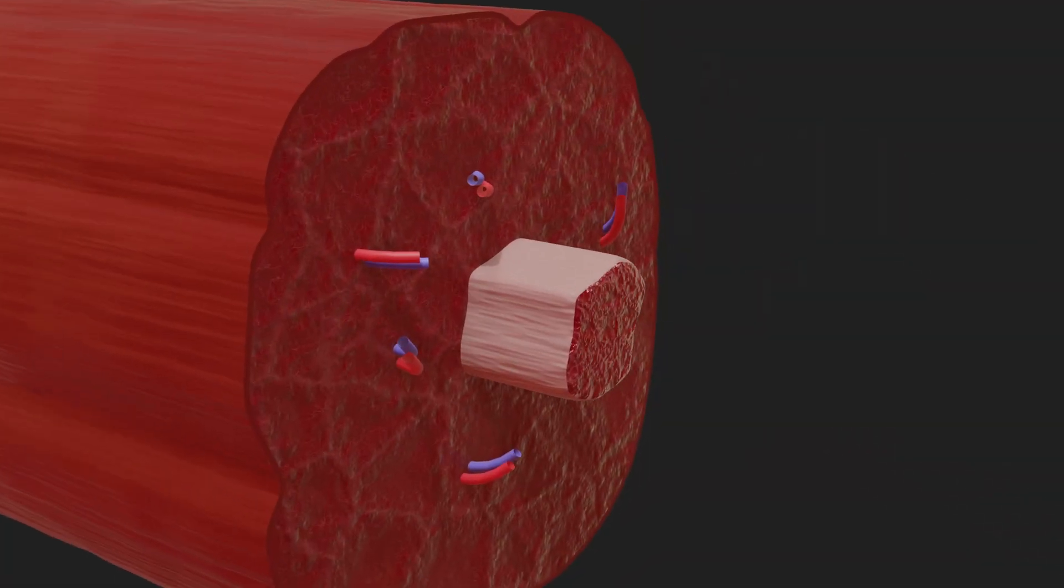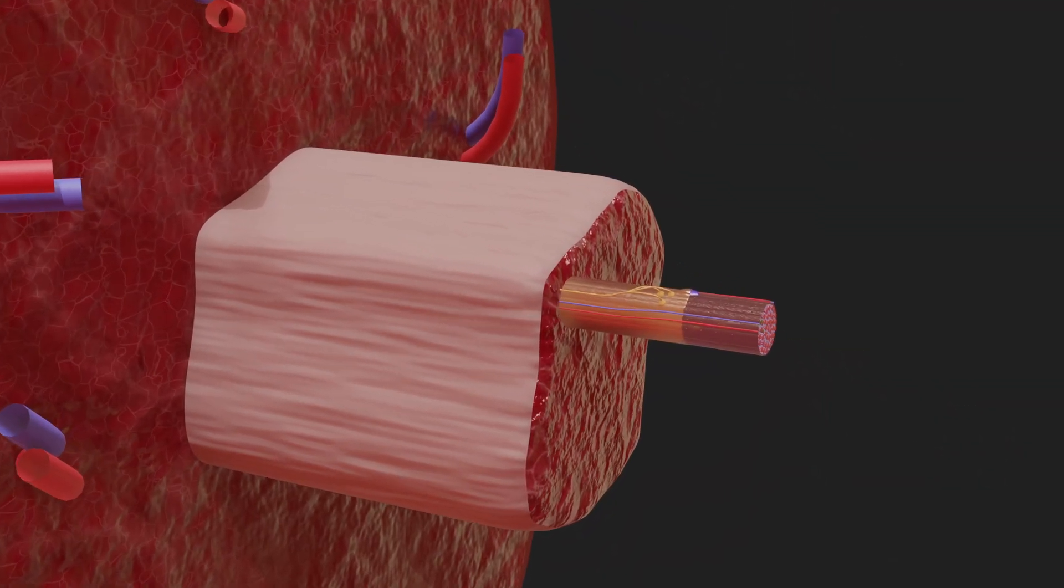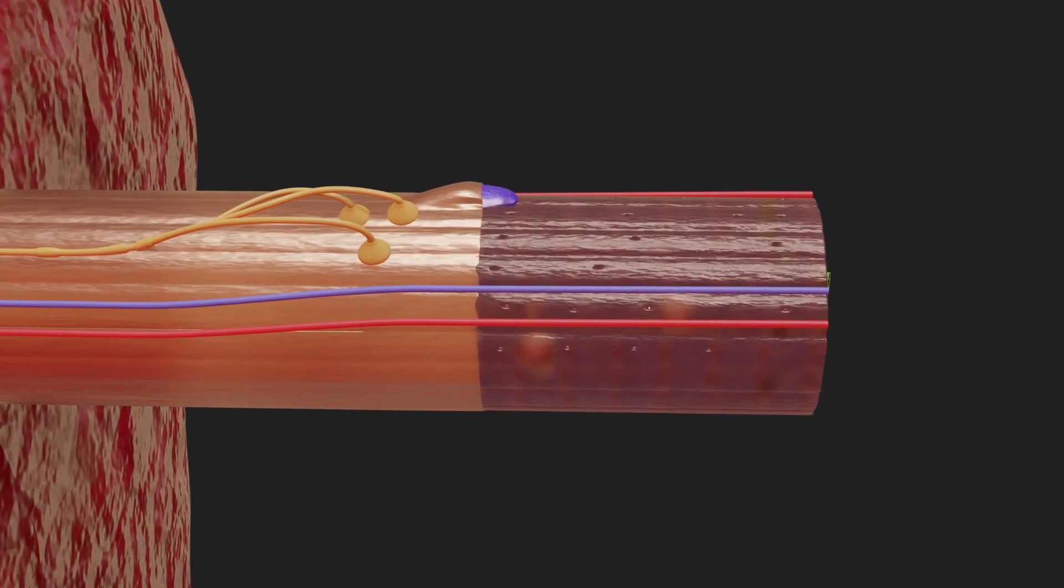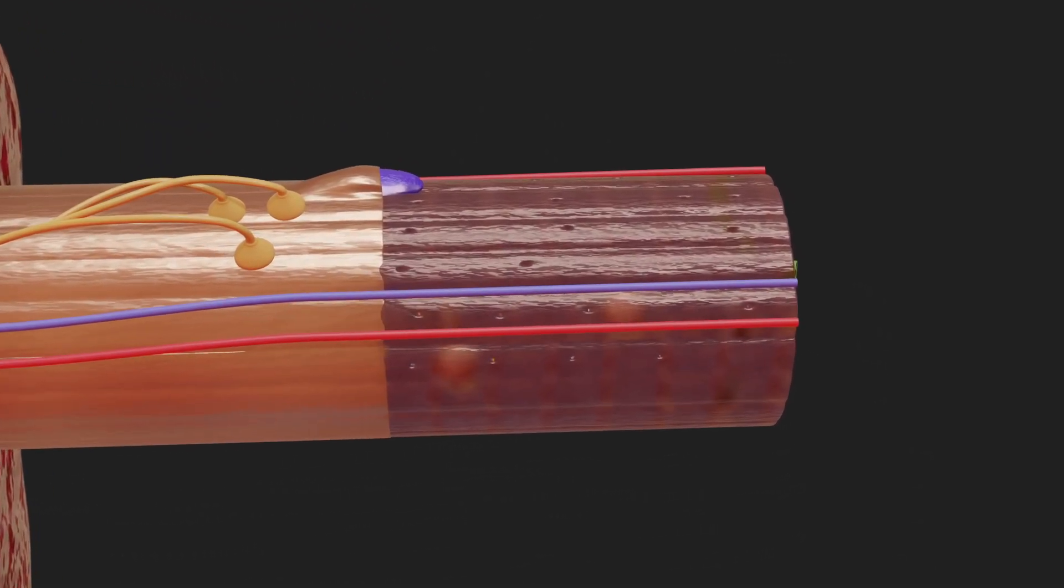They are made up of several muscle fiber bundles, which in turn contain many muscle fibers. These can be several centimeters long and have many cell nuclei and mitochondria.